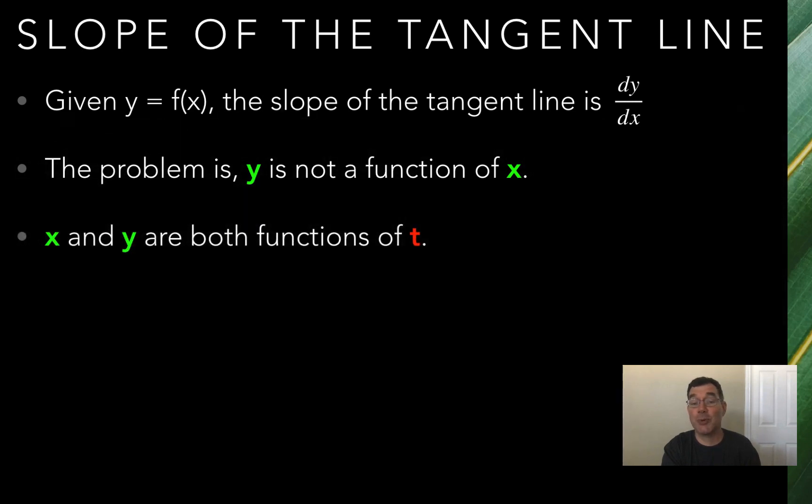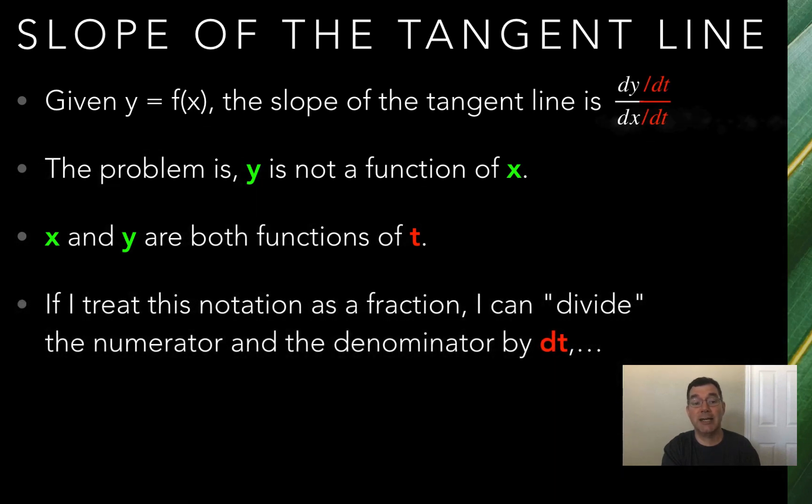y and x are both expressed in terms of t. So how do I find dy dx if x and y are both expressed in terms of t? What I can do is treat the dy dx as a fraction, and divide the top and the bottom by dt, which I did there in red. And so now the slope of the tangent line becomes dy dt over dx dt. And I know both of those, or at least I can figure them out, because x and y have both been expressed in terms of t.